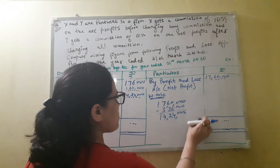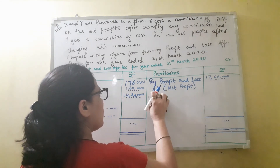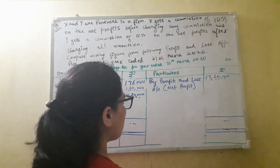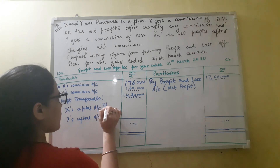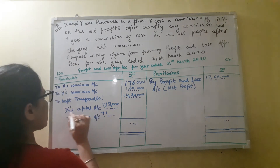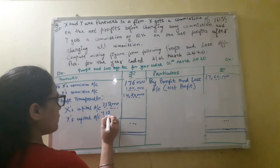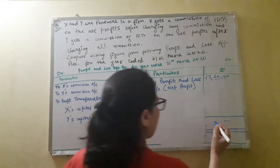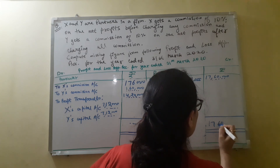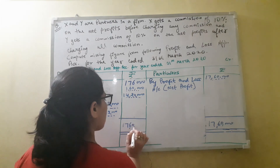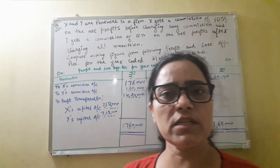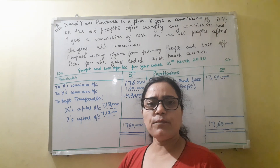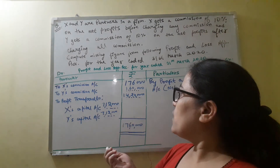The partners' profit sharing ratio is not given in the question, so if the profit sharing ratio is not given, the partners will share profit or loss equally. So we will halve this portion: X's share will be 7,12,000 and Y's share will be 7,12,000. The total will be 17,60,000 on both sides. This is how we calculate the missing figures, because we have knowledge about calculating commission of a partner in two ways. Thank you.